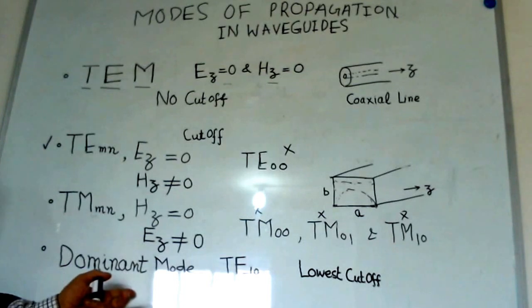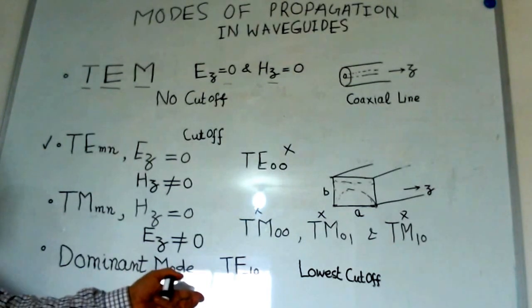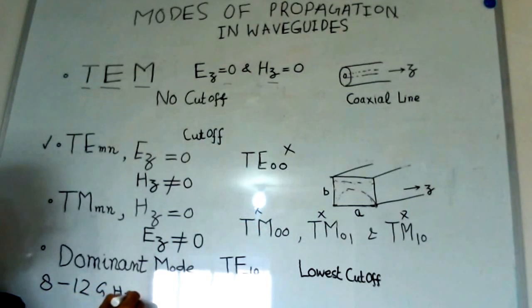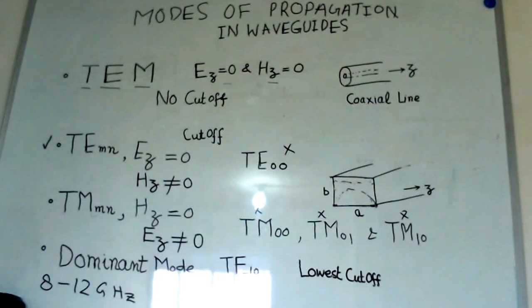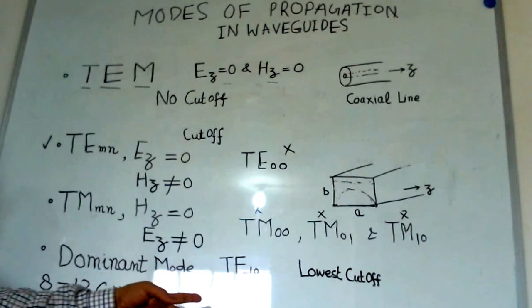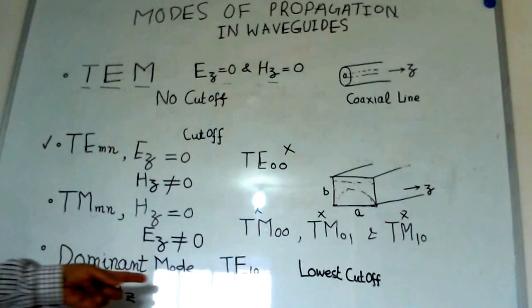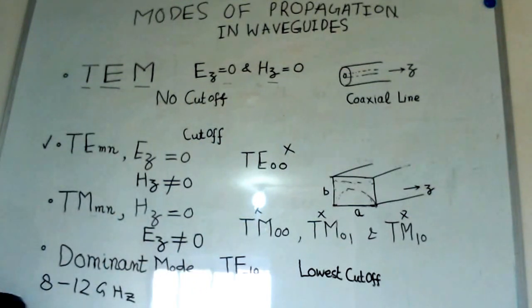For example, for X band frequencies, normal test ranges which are available in the laboratories have the X band test range. That is, the frequency is from 8 to 12 GHz. This entire range of frequencies can be passed through the waveguide without interference of other modes in a rectangular waveguide if it is operating in TE10 mode.